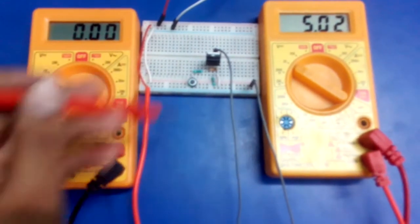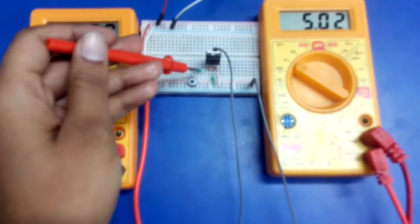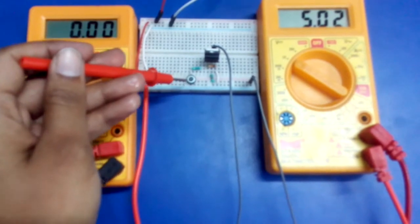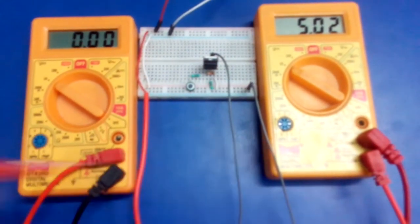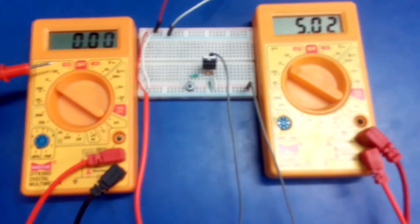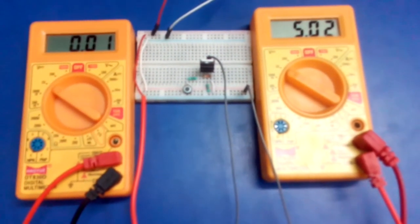Right now the gate is not getting any triggering pulse and it is connected with this push button. We have two voltmeters: this one is for observing the voltage across the load and this one is for drain to source.